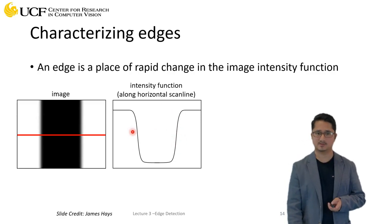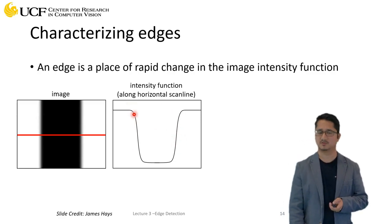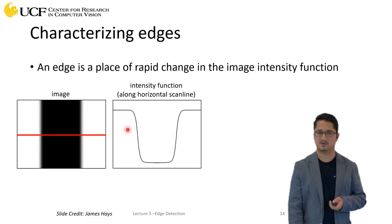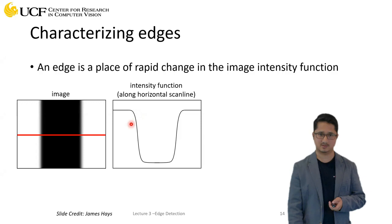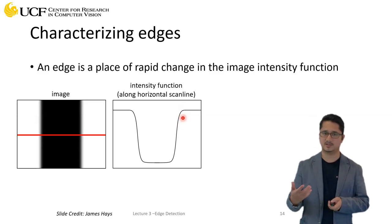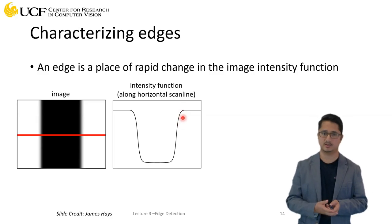By just looking at the intensity profile, we can get a sense of where the edges are present — the pixel values are changing at those locations. So let's see how we can extract these edges automatically.